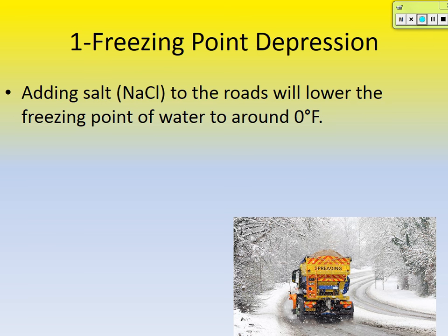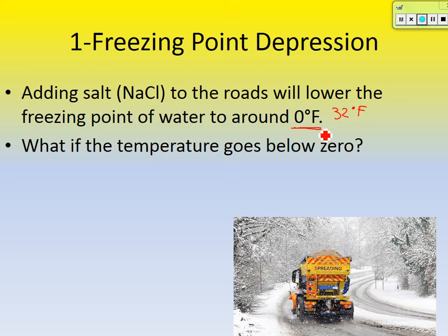Adding salt to the roads lowers the freezing point of water to around zero degrees Fahrenheit — remember, water usually freezes at 32 degrees Fahrenheit. Road plows spread salt behind them to lower the freezing point, so instead of water freezing at 32, it won't freeze until zero. This prevents the water from freezing on the roads, keeping it safer. If the temperature does go below zero it will still freeze, but in the daytime in winter the temperature often gets above zero, melting the ice off the roads.